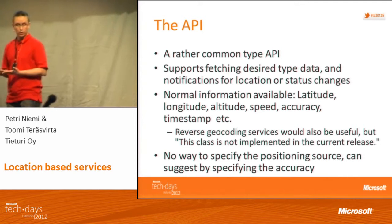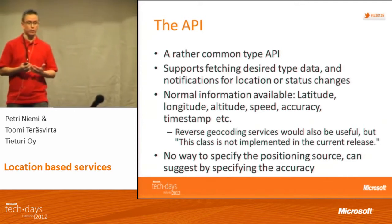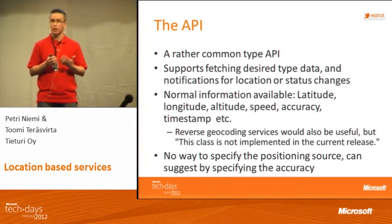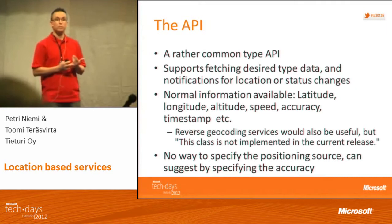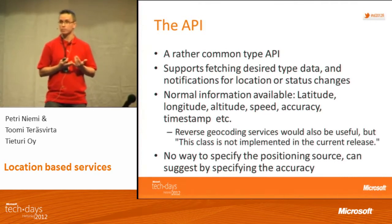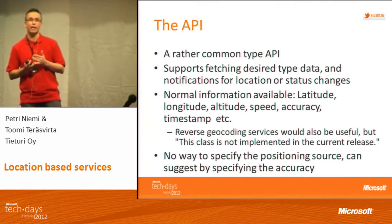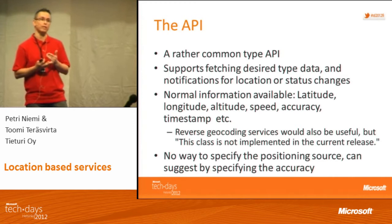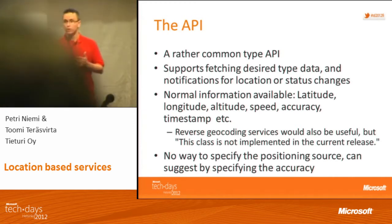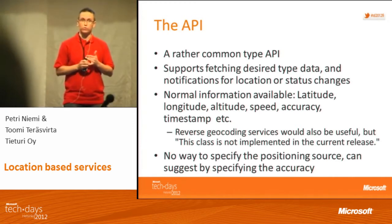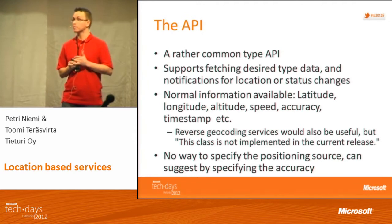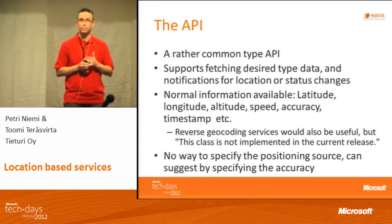Latitude, longitude, altitude, speed, accuracy, timestamp, and so on. One thing that's missing at the moment is reverse geocoding — getting the address by latitude and longitude. For that, you need to use some sort of a web service. For example, Bing Maps has a web service for that.